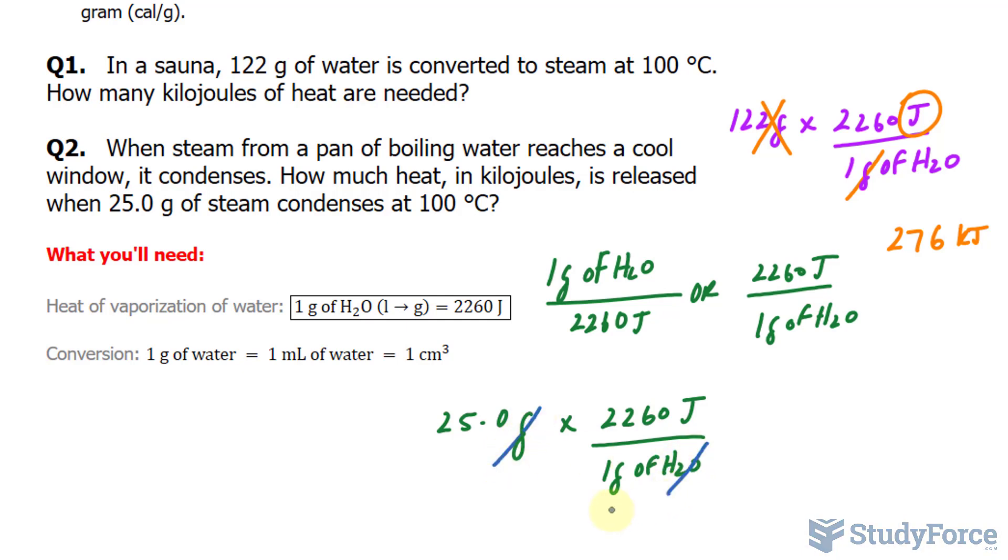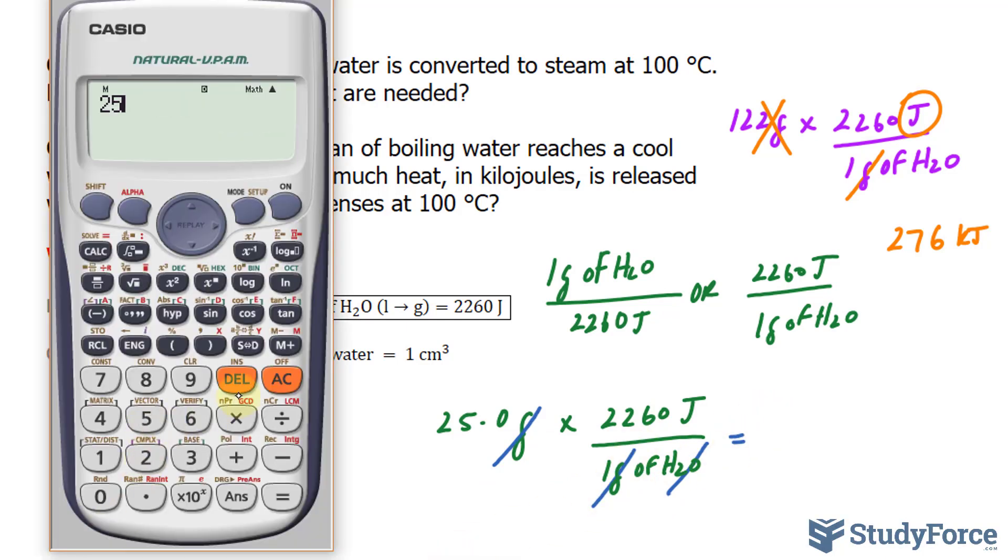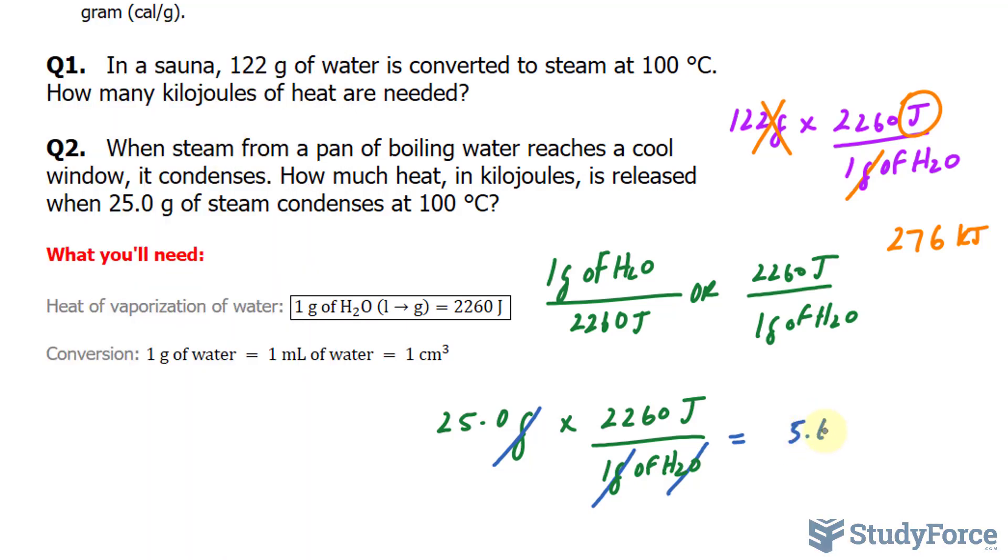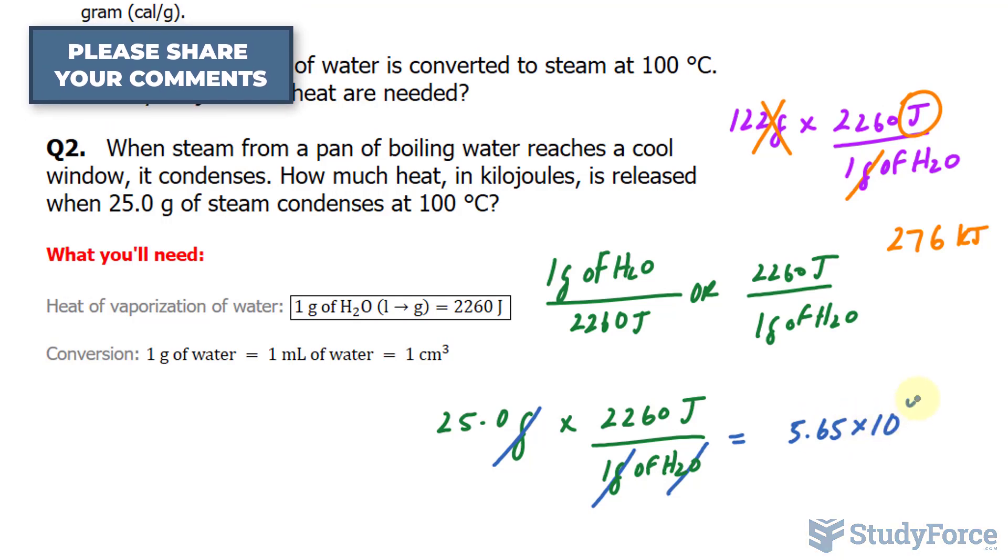This and this cancel out. Let's use our calculator again. 25 times 2260. Notice that we have three significant figures here. That's an exact number. Any conversion ratio, namely a constant, is considered generally an exact value, so we don't take into account its amount of significant figures. So to three significant figures, and in scientific notation, I'll write this as 5.65 times 10 to the power of 4.